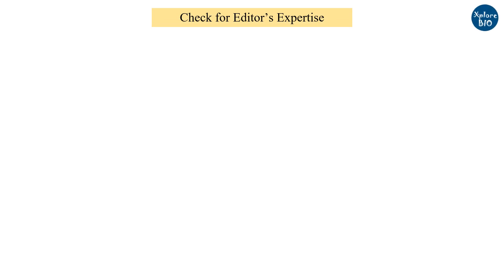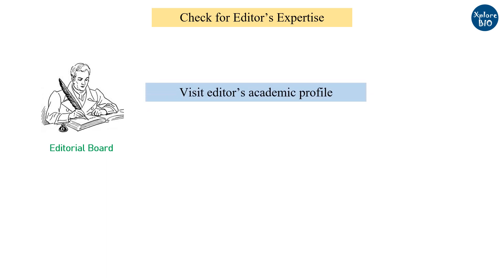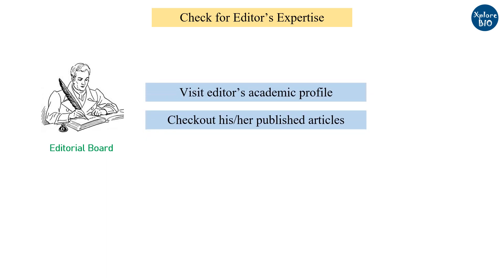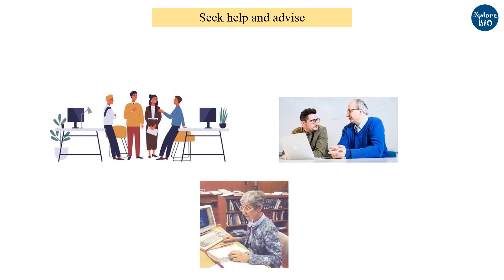You can also visit the journal's website to check if the editorial board members actually exist and verify their expertise by visiting their academic profiles or papers published by them. If you still face difficulty in determining whether a journal is predatory, you can always seek advice from your colleagues, mentors, and librarians.